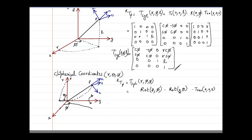Now I will write the matrix clearly. For rotation with respect to Z at angle phi: cos phi, minus sin phi, 0, 0 in the first row; sin phi, cos phi, 0, 0 in the second row; 0, 0, 1, 0 in the third row; with a scaling factor of 0. There is no translatory motion, so this is the matrix for rotation about the Z axis by angle phi.